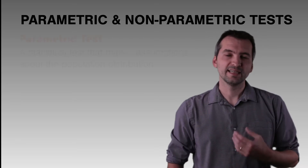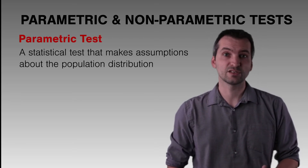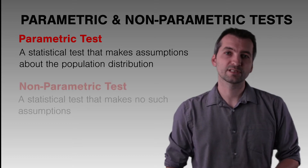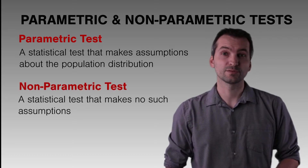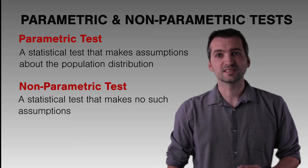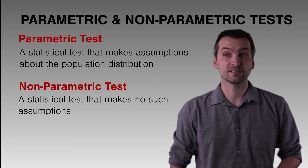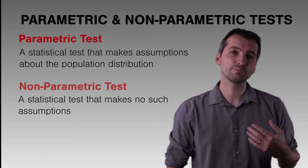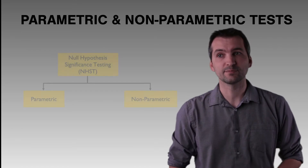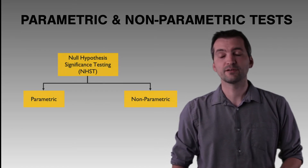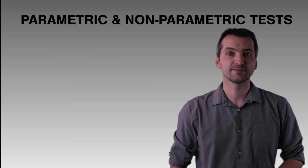A parametric test is a statistical test that makes certain assumptions about the population and its distribution. Non-parametric tests do not make those same assumptions. Both types are forms of null hypothesis significance testing, assessing whether the null hypothesis is rejected or accepted.